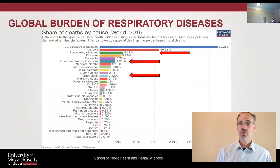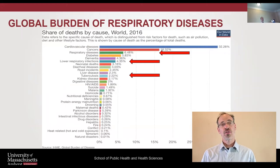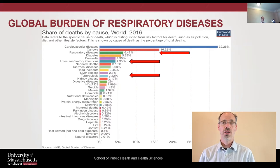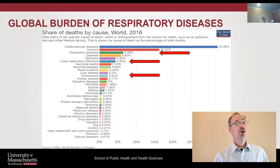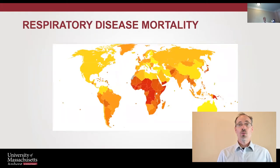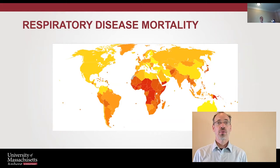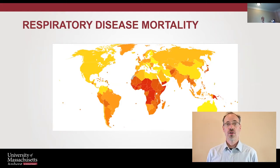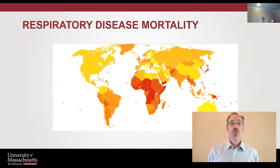Global burden of respiratory diseases — respiratory diseases are no joke. They account for 6.48% of all global mortality. Lower respiratory adds another 4 to 5%, and TB adds another 2%. So we're talking almost 15% of worldwide mortality coming from respiratory diseases. Developing countries have a much higher share of that burden.